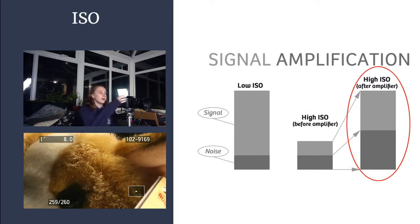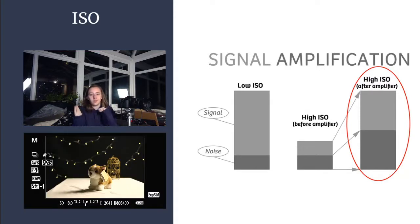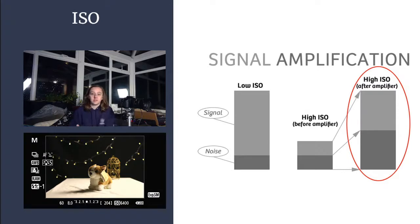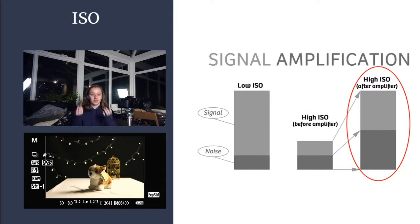ISO is really great to control when you want to give a photo a little bit of grain and an old-world feel. It's also good for helping change your level of brightness when you can't adjust your aperture or shutter speed. The last thing to note about ISO is that doubling your ISO doubles the amount of light coming in — and doubling the amount of light is called increasing the exposure by one stop. Remember that, we'll come back to it.